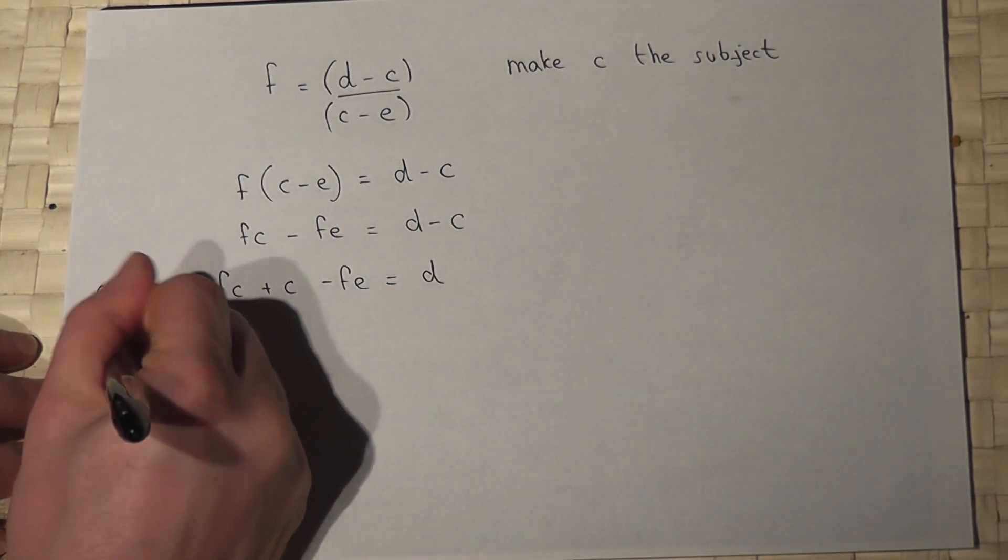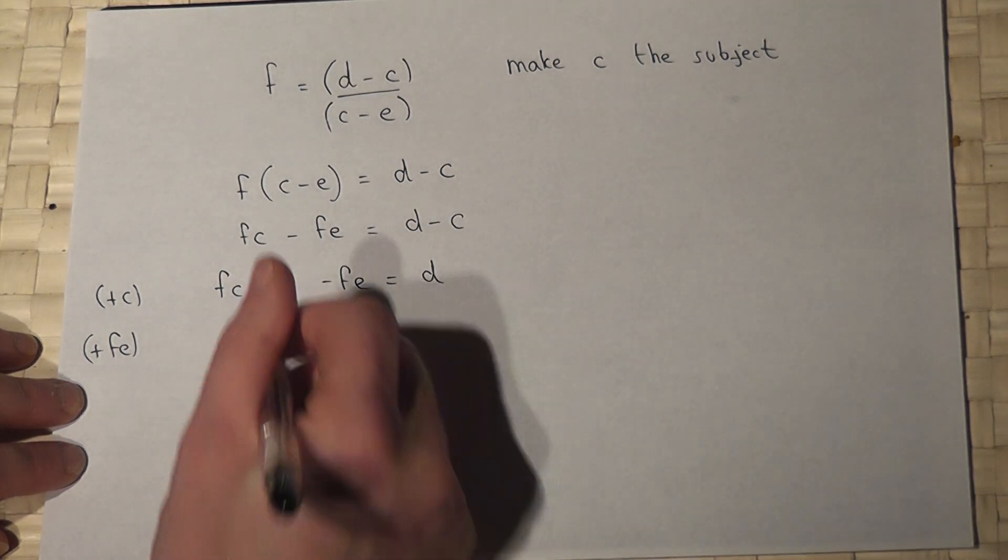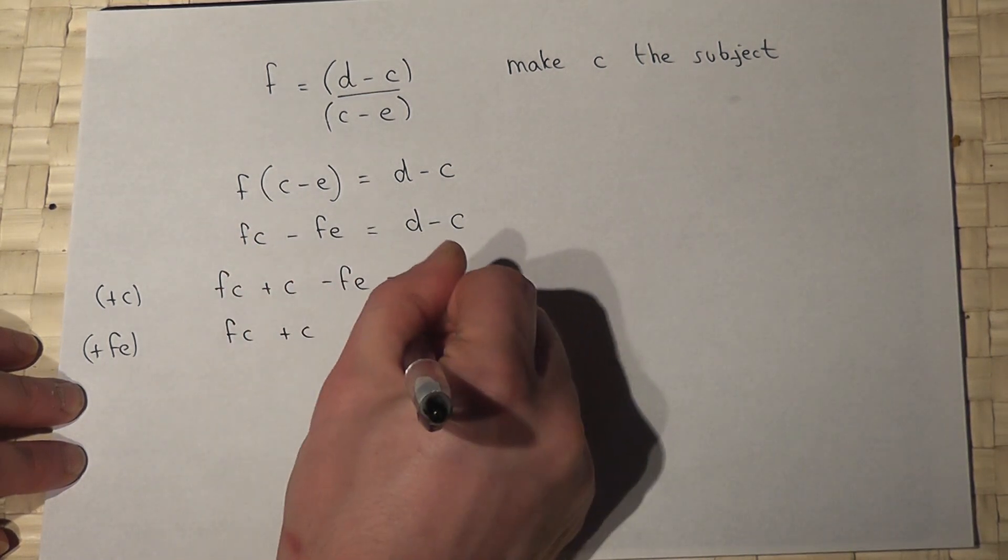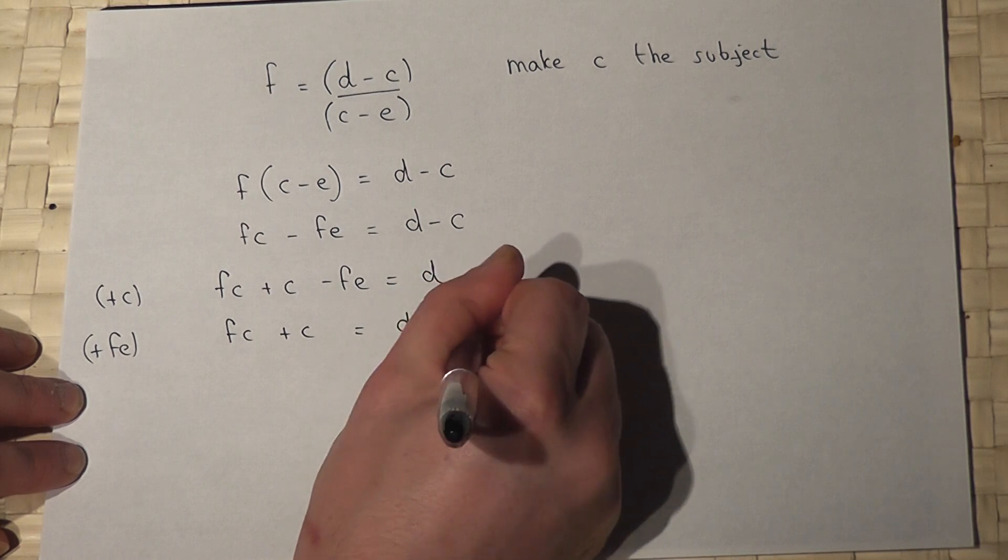I will then add FE to both sides, so FC plus C equals D plus FE.